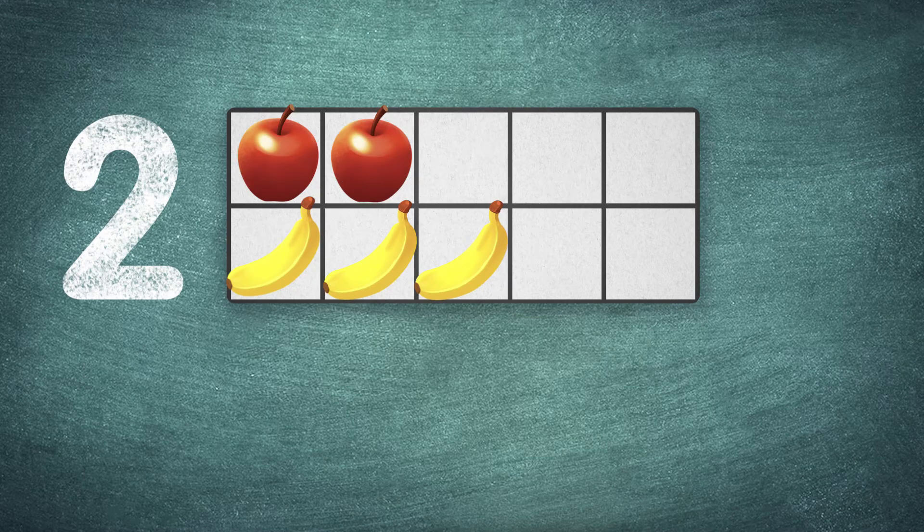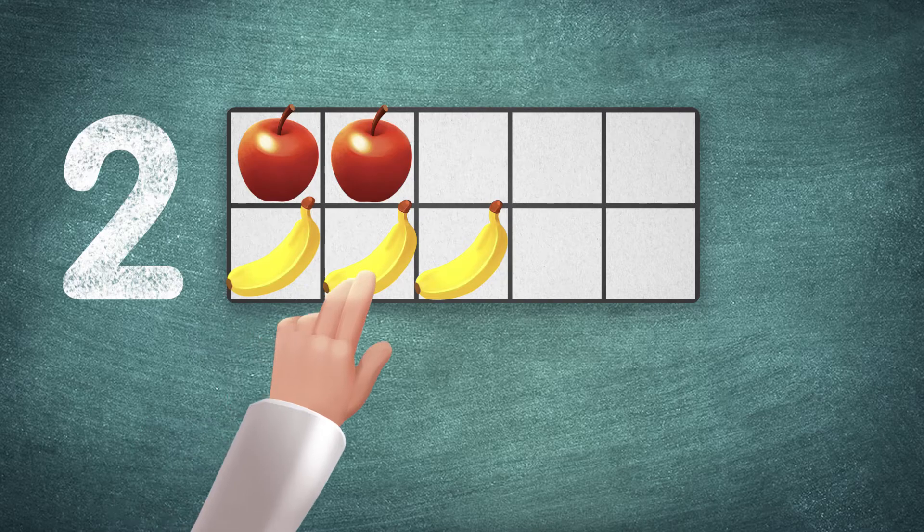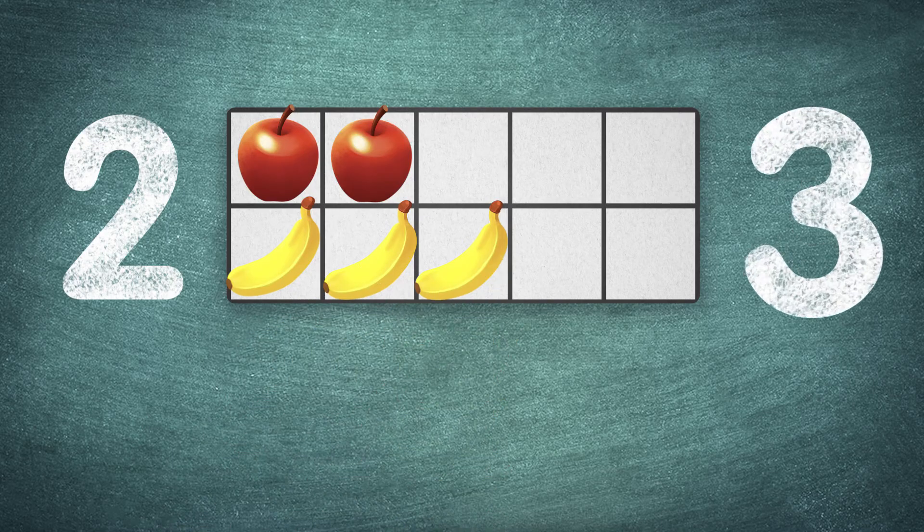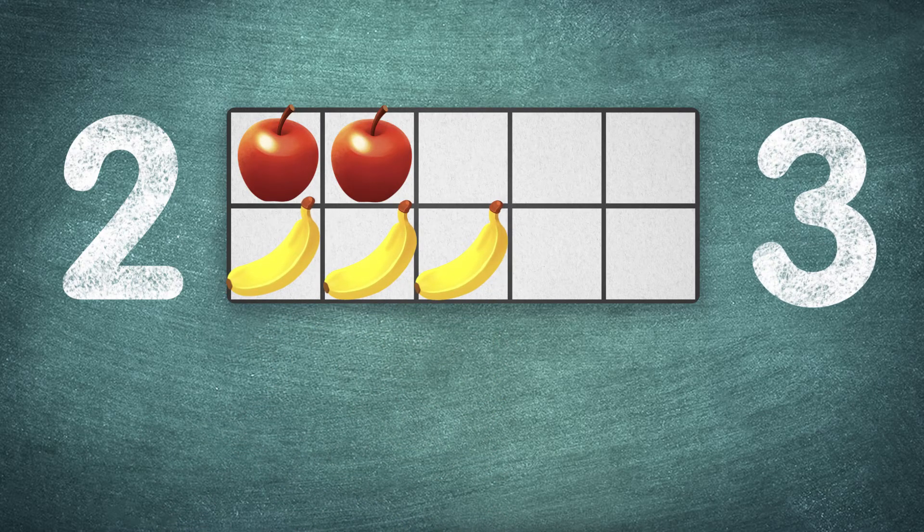How many bananas do we have? One, two, three. Three bananas. There are three bananas.